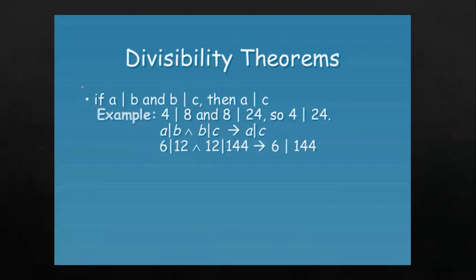Theorem number 3 is: if a divides b and b divides c, then a divides c — which is the transitive property. Similar to how a plus b equals b plus c implies a plus c, if a divides b and b divides c, it means a and c can be directly connected as factors. For example, 4 divides 8 and 8 divides 24, so 4 divides 24. So 4 is a factor of 24, and a divides b and b divides c implies a divides c.